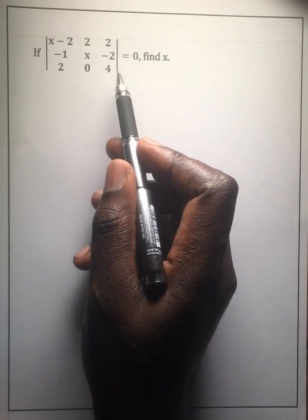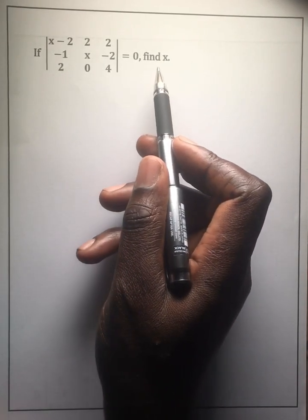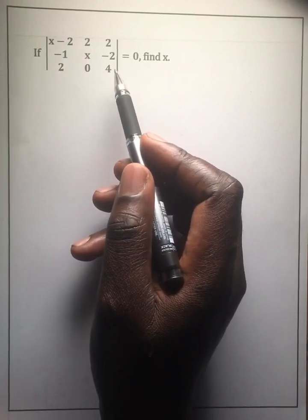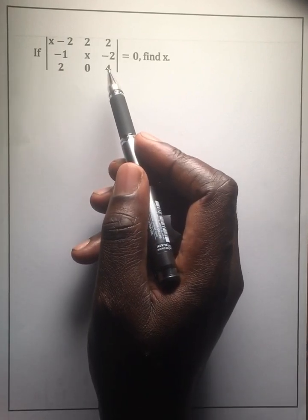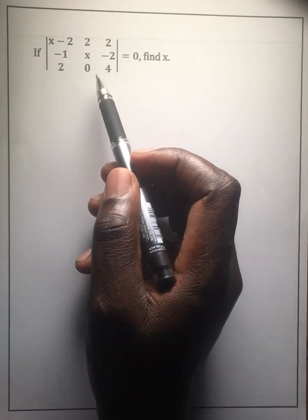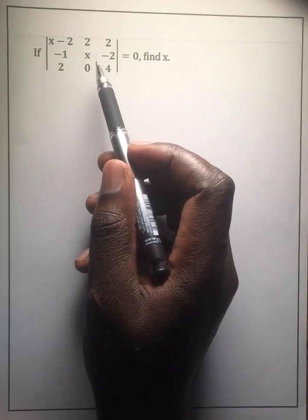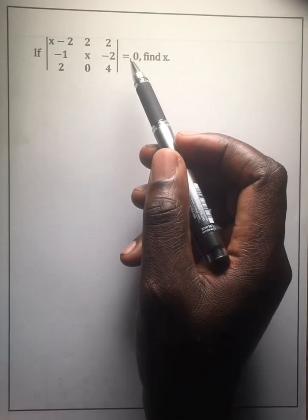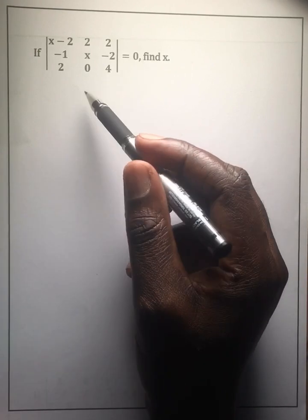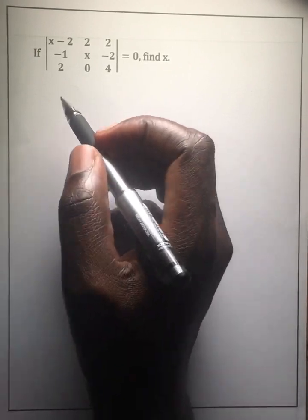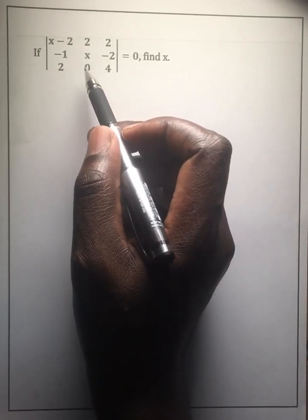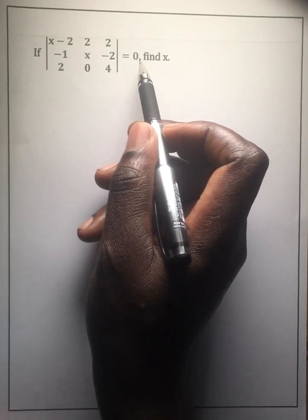If the determinant of this matrix is equal to 0, find x. These parallel brackets imply a determinant, so it means this is a singular matrix — that's why the determinant is equal to 0. So let us get the determinant of this matrix and then equate that to 0.